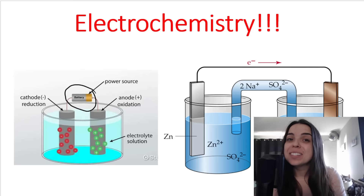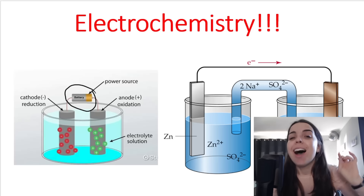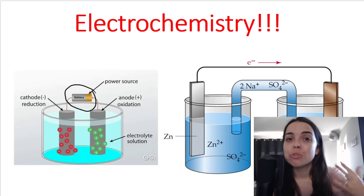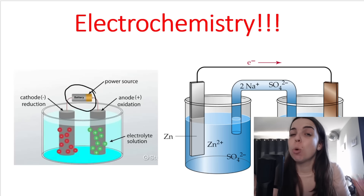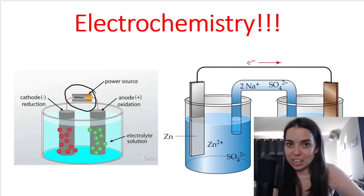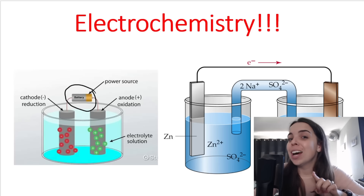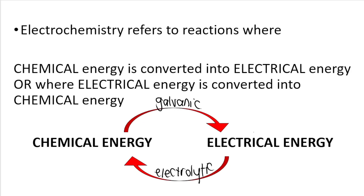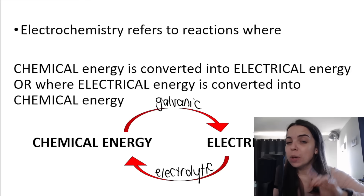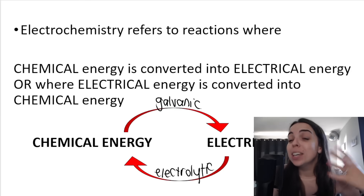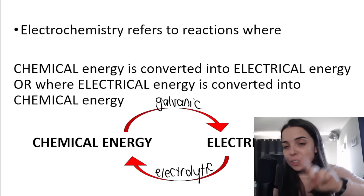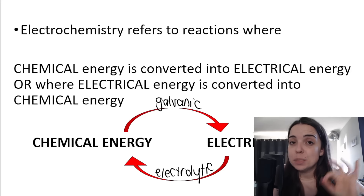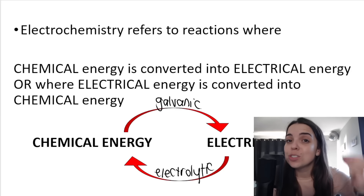Let's speak about electrochemistry, but before we do, I need to remind you about redox reactions because redox reactions form the basis of electrochemistry. If you don't understand that, you're not going to understand the galvanic and the electrolytic cells. Electrochemistry refers to reactions where we either convert chemical energy into electrical energy, or we do the opposite — convert electrical energy into chemical energy. This conversion of energy takes place through redox reactions.